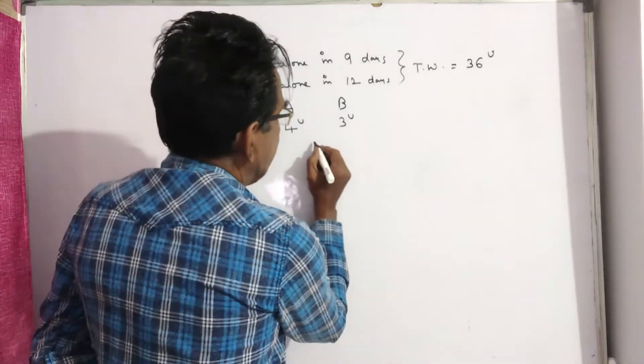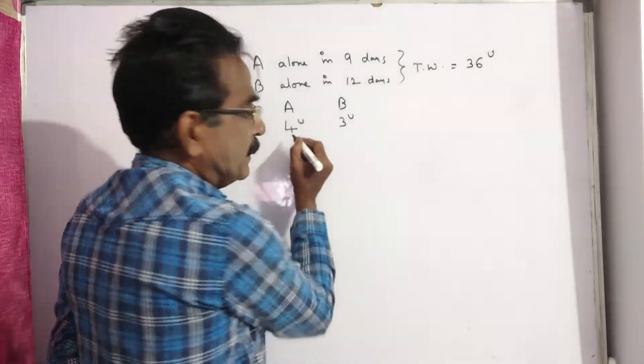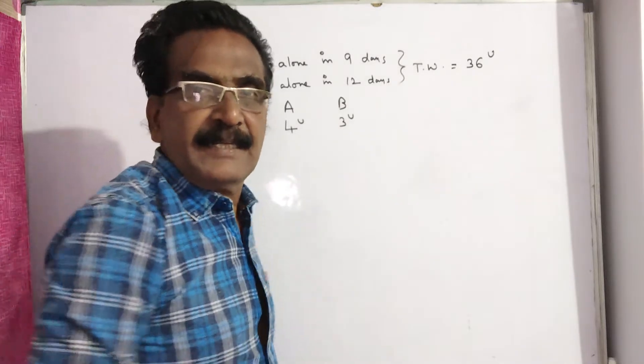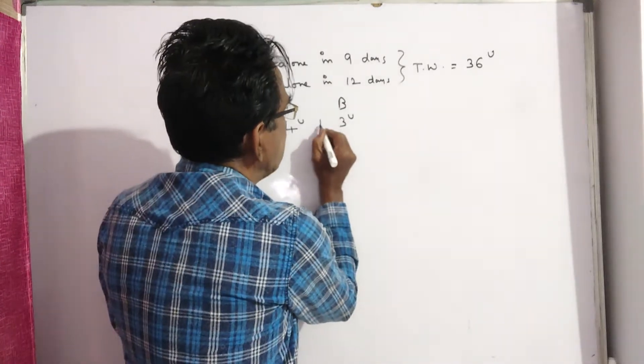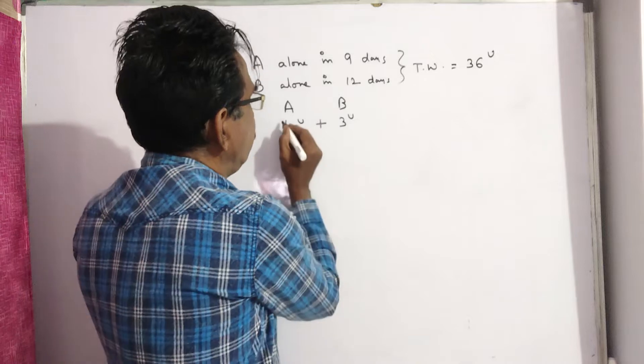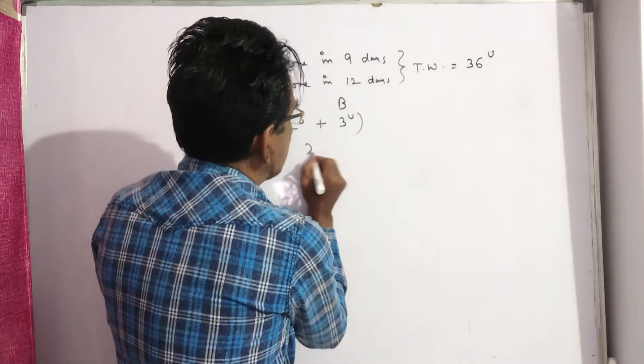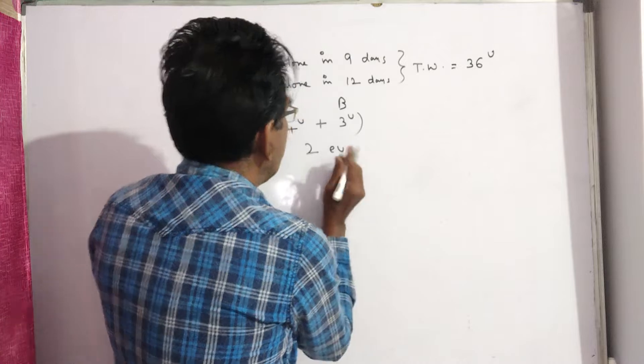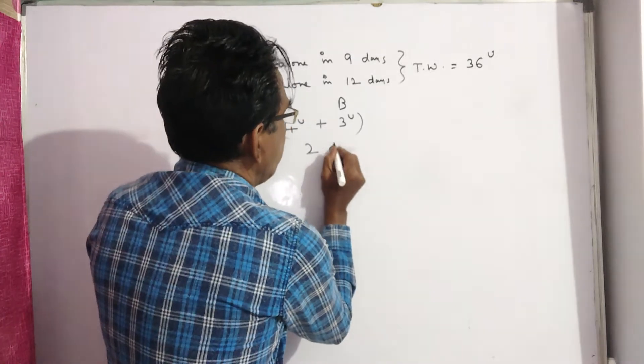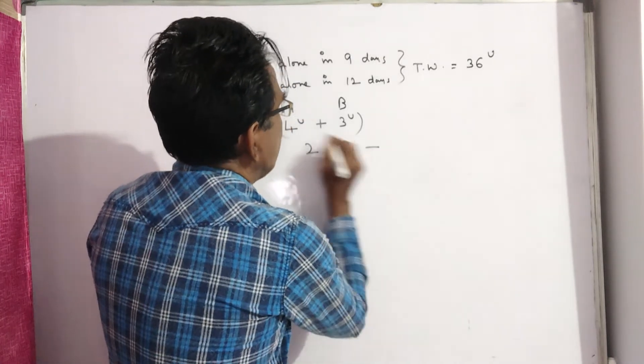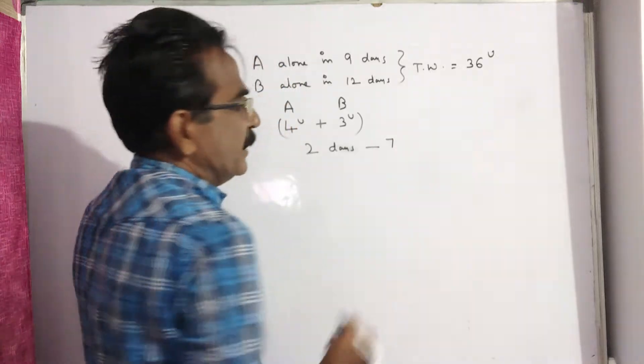First day A comes, A completes four units of work and second day B comes, B completes three units of work. So, for every two days, seven units of work will be completed.